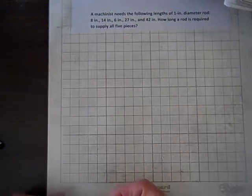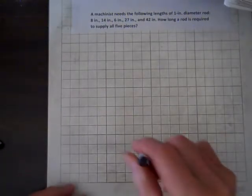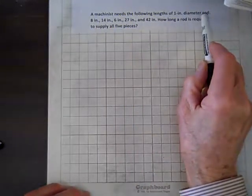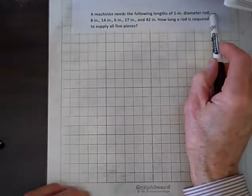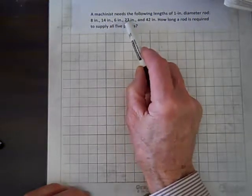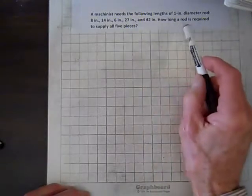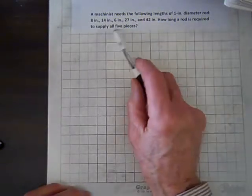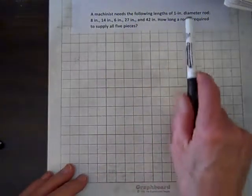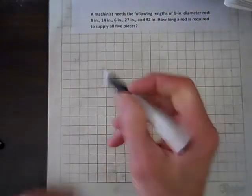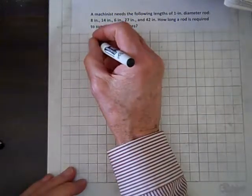Well, here we have a little addition problem, so let's read it and see what it's about. A machinist needs the following lengths of 1 inch diameter rod: 8 inches, 14 inches, 6 inches, 27 inches, and 42 inches. How long a rod is required to supply all five pieces? Well, the diameter isn't an issue, it's the length of the rod, so let's just label these lengths.